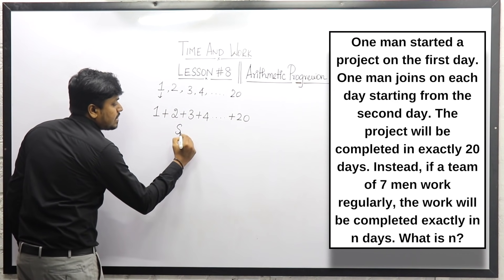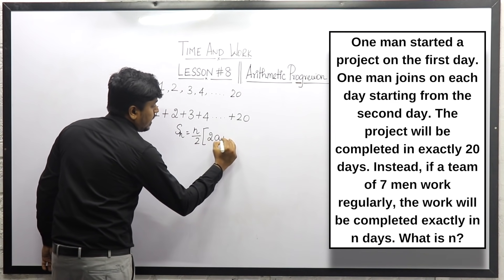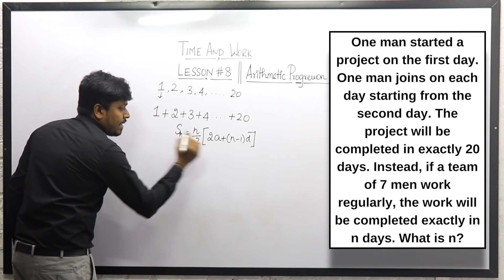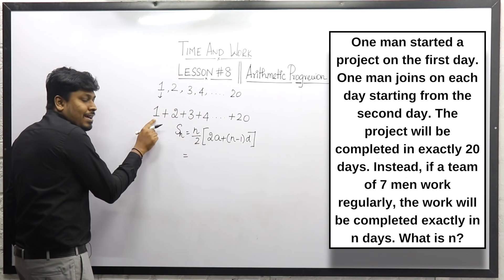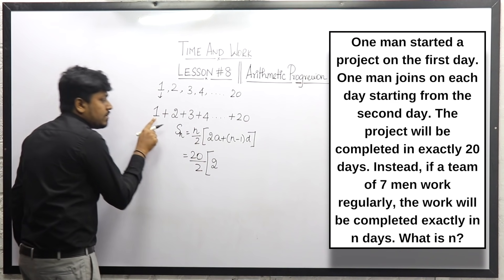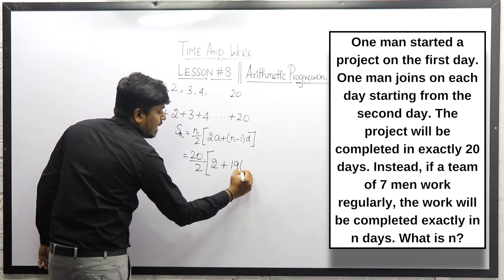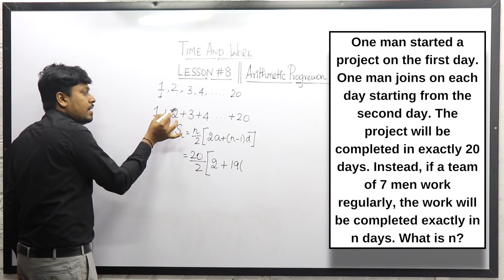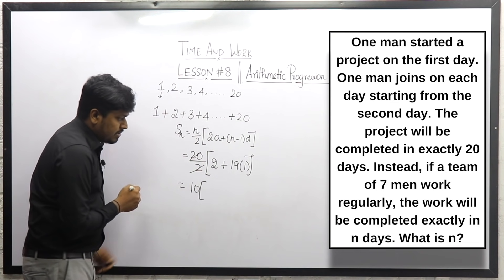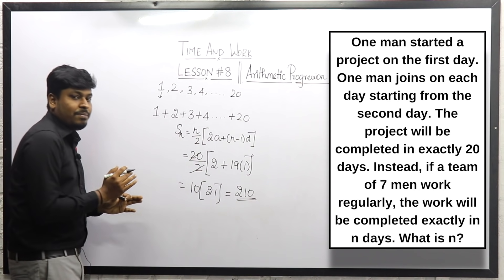Applying the AP formula S(n) = n/2 × (2a + (n−1)d): here n = 20, a = 1, and d = 1 (since 2 − 1 = 1). So: S = 20/2 × (2×1 + (20−1)×1) = 10 × (2 + 19) = 10 × 21 = 210. The total work done in 20 days is 210 units.